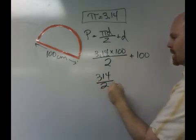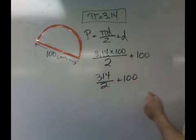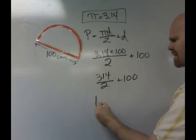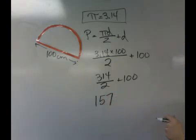And then we're going to divide that by two, and then we're going to add 100. So 314 divided by two—because I'm amazing at math, I could do that in my head—it's 157.